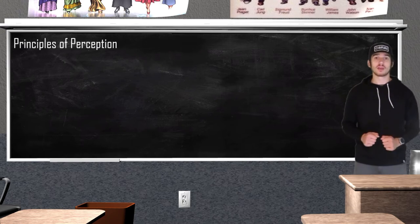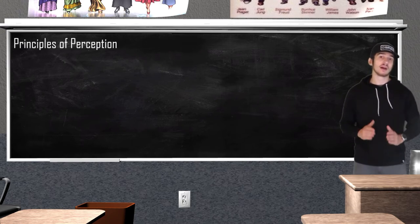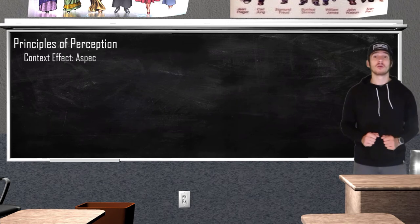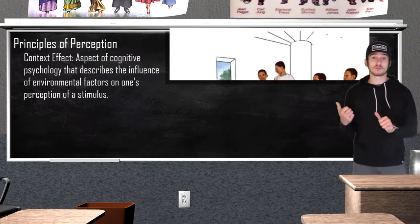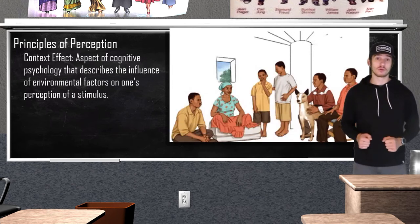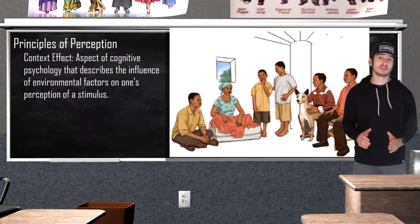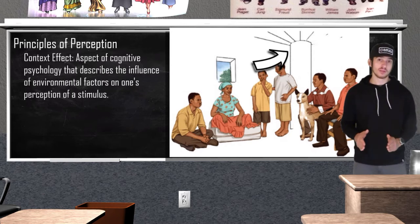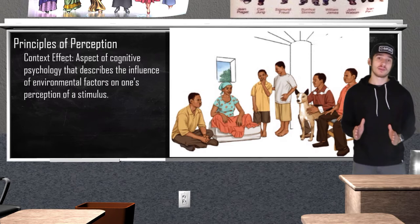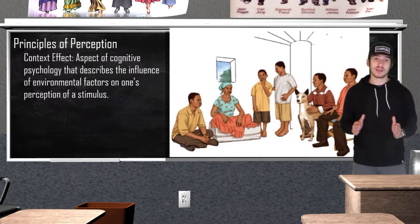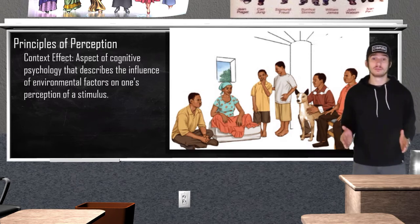Another concept of perceptual interpretation is the context effect. Context effects can often explain how cultural bias can influence our perception. In a cross-cultural study, those from East Africa believed an image showed a group under a tree with a metal box on the woman's head, while Westerners perceived the family as being inside with a window above her head.